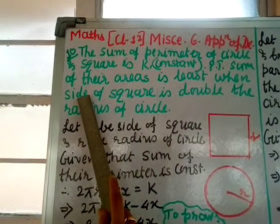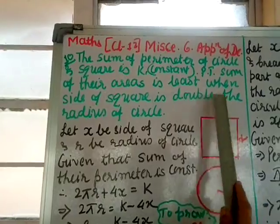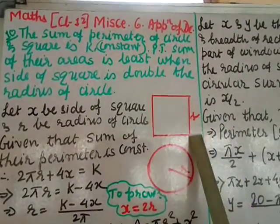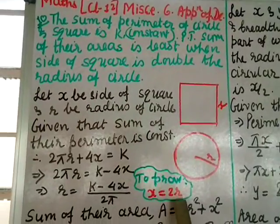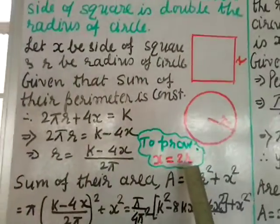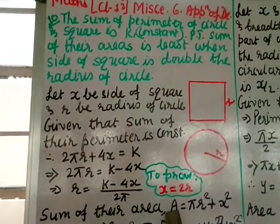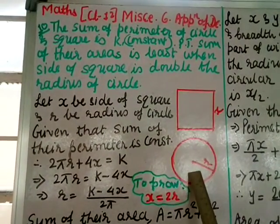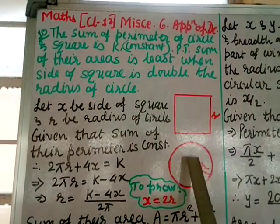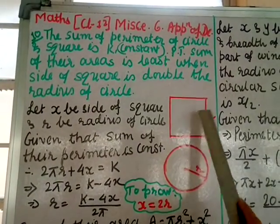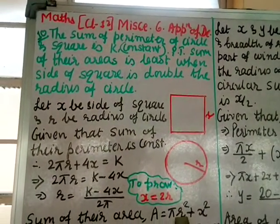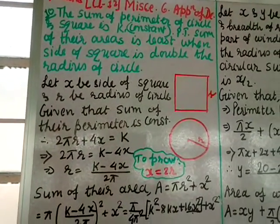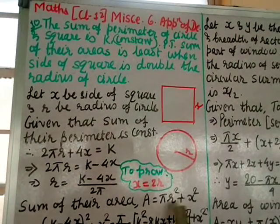We have to prove that the side of the square is double the radius of the circle, i.e., x = 2r. Now the sum of areas: area of the circle is πr² and area of the square is x². Substituting the value of r: A = π[(k − 4x) / 2π]² + x².